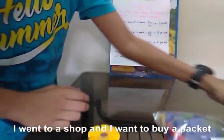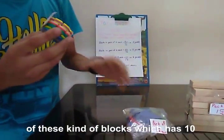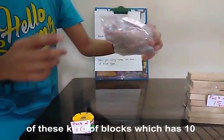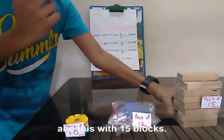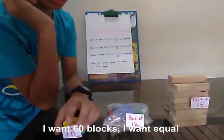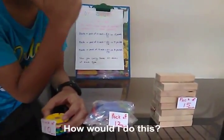Now, I have gone to a shop and I want to buy packets of blocks. This kind has 10 blocks, this has 12 blocks, and this has 15 blocks. I want 60 blocks total. I want equal blocks of each type. How would I do this?